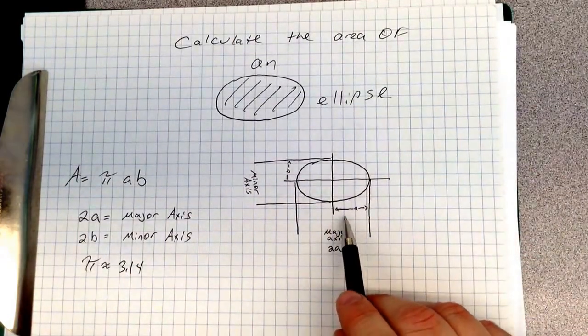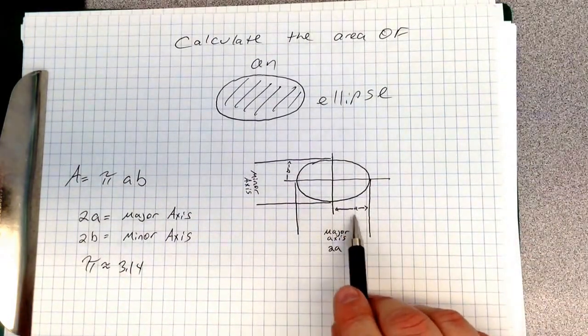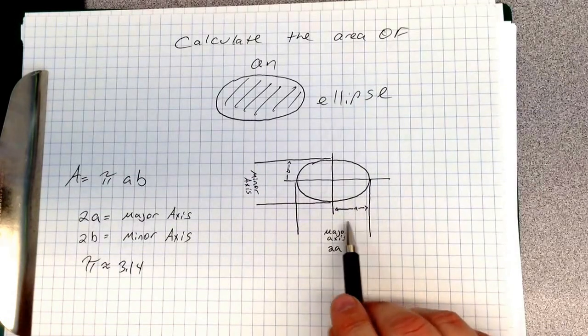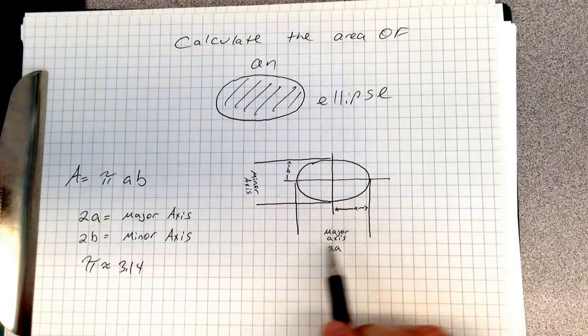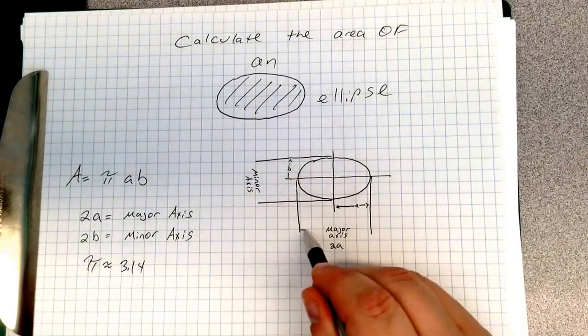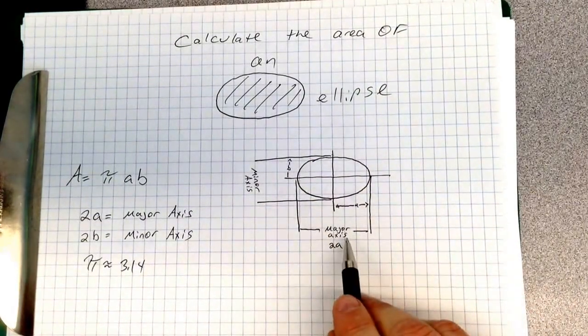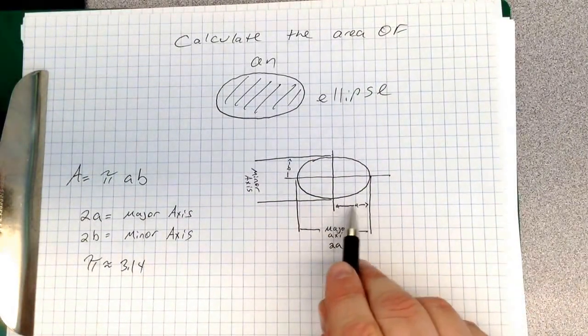Now on this, we can see that this is the length a. This is called your major axis. Well, 2a is your major axis. So from here to there is your major axis. You need to know this distance right here.